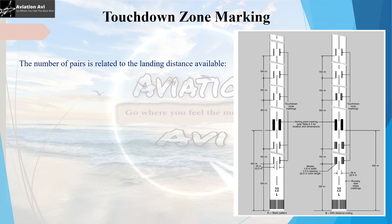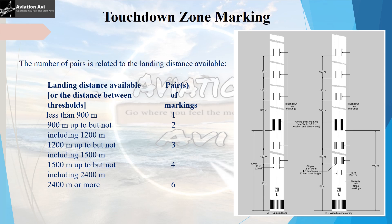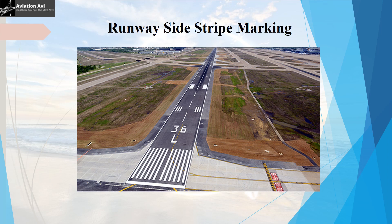The number of pairs of touchdown zone markings is related to the landing distance available. For most civil aerodromes where LDA between the two thresholds exceeds 2400 meters, there are 6 pairs. In the example runway, there were supposed to be 6 touchdown zone markings, but the third set is obliterated because it falls within 50 meters of the aiming point marking located 400 meters from the threshold.